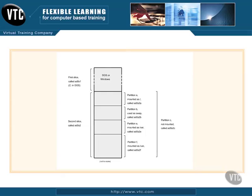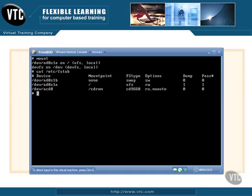Then we have another slice — the second slice called AD0S2. Within AD0S2 you have several partitions. It can get confusing depending on whether we're talking Linux or BSD. The second slice, AD0S2, is divided into partitions A, B, E, and F, and you have them mounted as slash (root), swap, var, and usr. How things are called in BSD Unix is a little bit different.